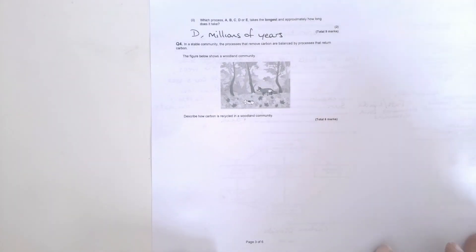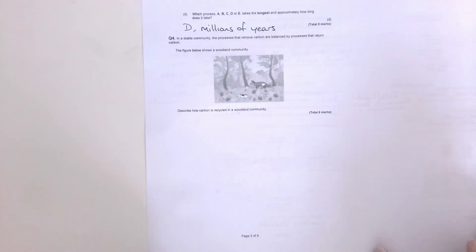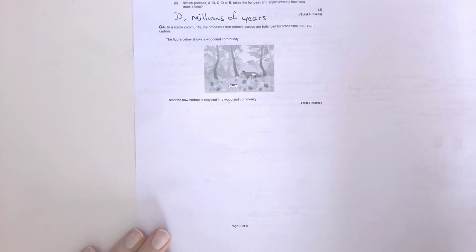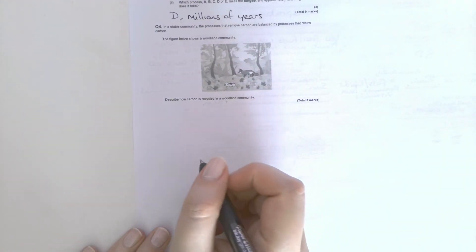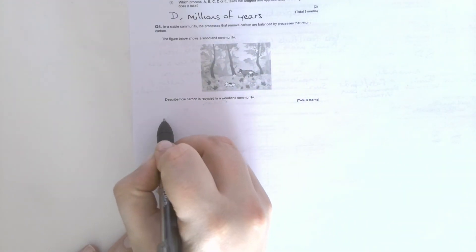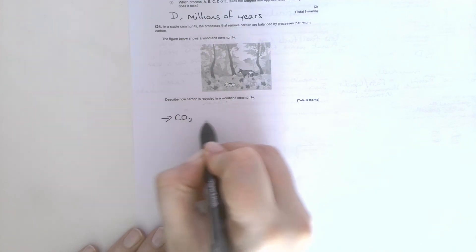And the last question, a six-marker about a woodland community and how carbon is cycled through it. Some of you did really well on this. Some of you need to use keywords a bit more often. So what I mean by that is, if we start with carbon dioxide in the atmosphere, carbon dioxide enters plants by photosynthesis.